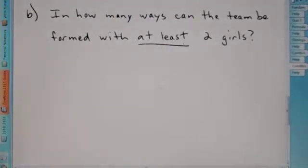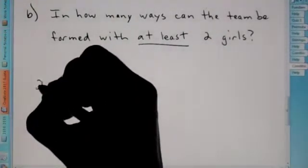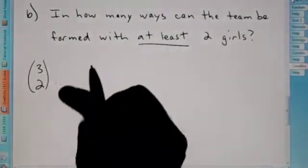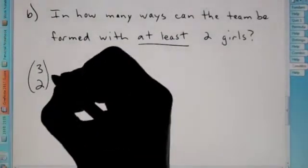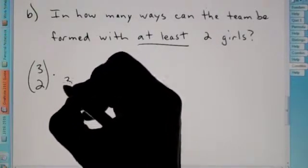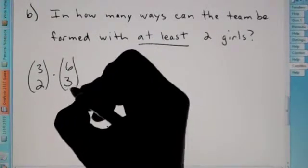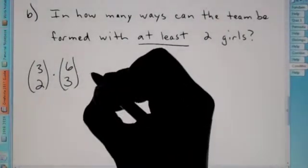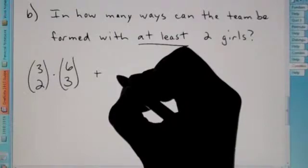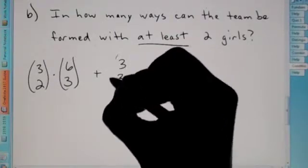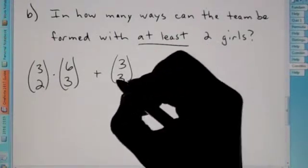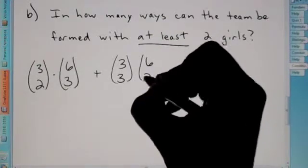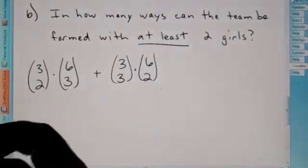In how many ways can the team be formed with at least—again, keyword—at least two girls. Well, if there's two out of the three girls chosen for a five-member team, two out of the three, that means three out of the six boys. There must be three out of the six boys to make up the five-member team. But it says at least, so there is a chance that you'll choose all three of the girls. So three out of three, which means if you have three girls, there's only two more boys that you need to make up the five-member team.